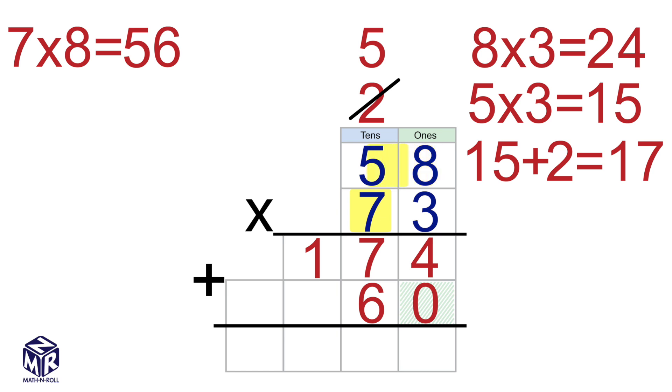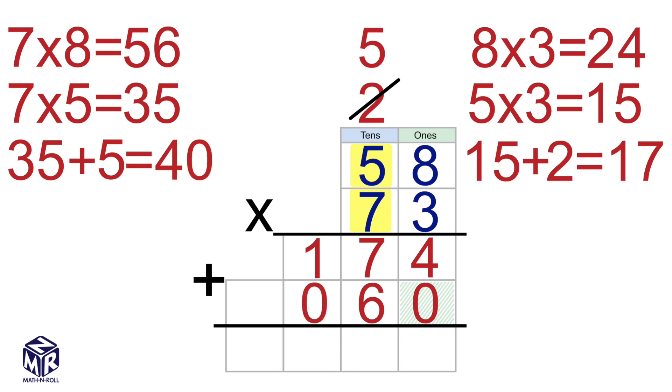Now we multiply 7 by 5. 7 times 5 equals 35. Add 5 to 35. We get 40. We write the 0 in the hundreds place and the 4 in the thousands place. Add the partial products.